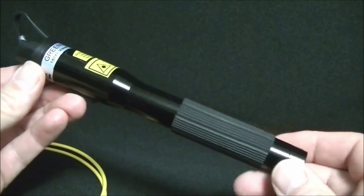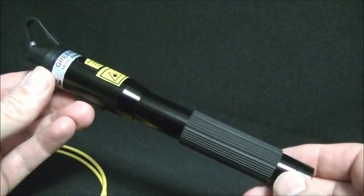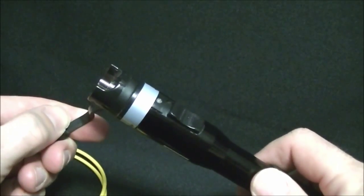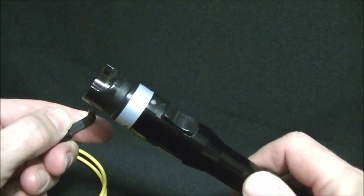The Greenlee Communications 180XL Visual Fault Locator. It has a 2.5mm universal bulkhead. There is a 1.25mm adapter available.